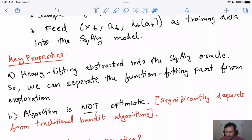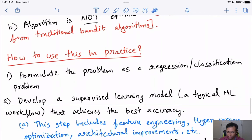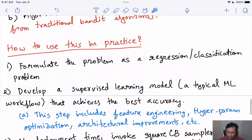Now how would one use this in practice? In your setup, the first thing you would want to do is formulate the problem as a regression or classification problem. Although in this video we primarily viewed this as a regression problem, the same exact analogous algorithm can be used for classification problems as well. Then you develop your supervised learning model that achieves the best accuracy. This is how your typical ML workflow would look like—this is the step where you would do things like feature engineering, hyperparameter optimization, any architectural improvements, whether it's decision trees, neural nets, what type of architectures within neural nets, transformers, etc.